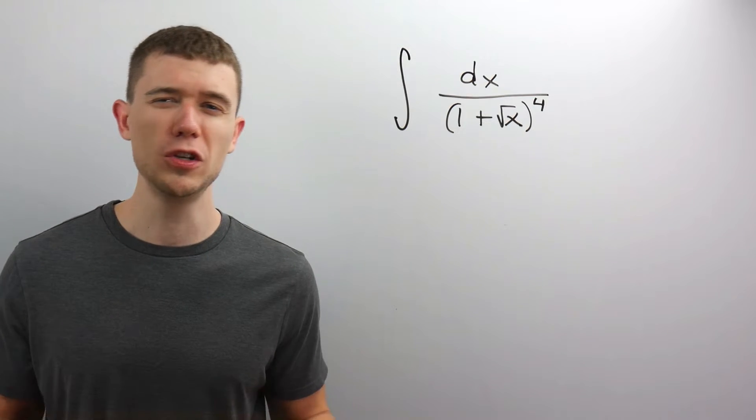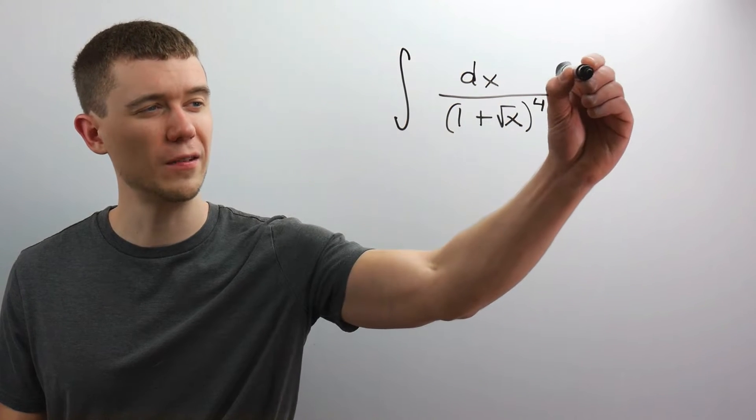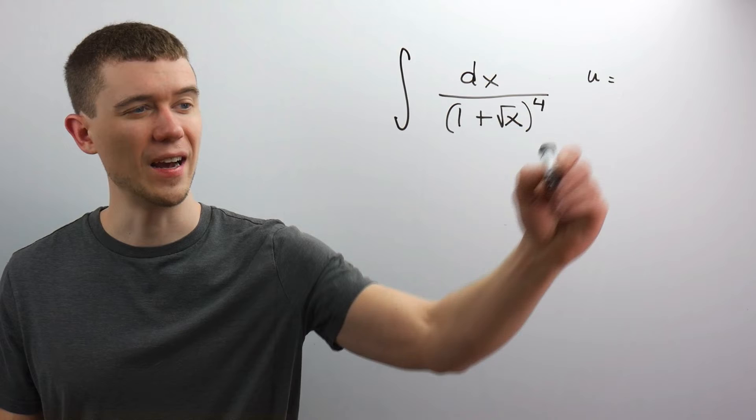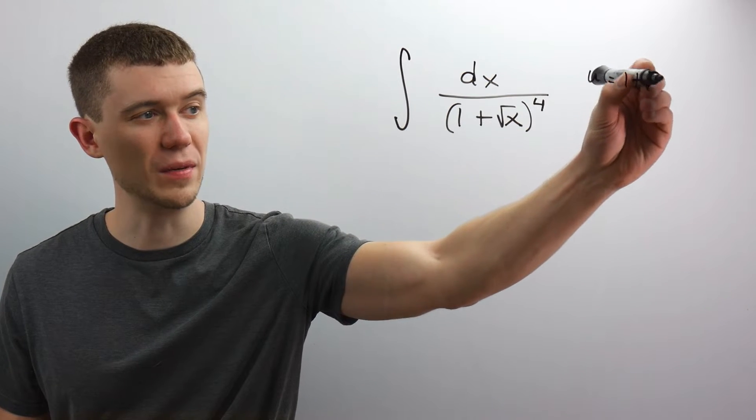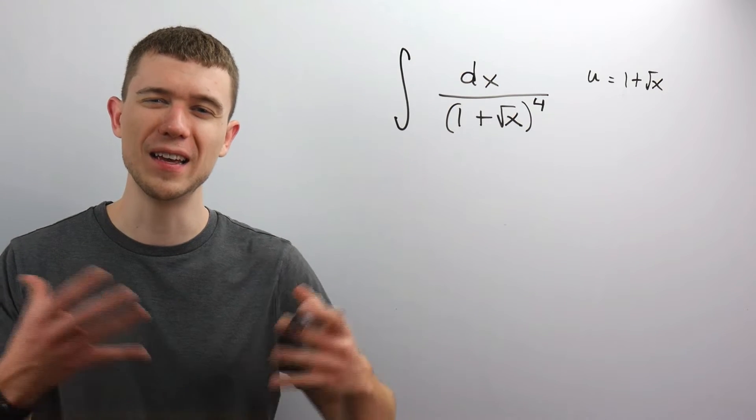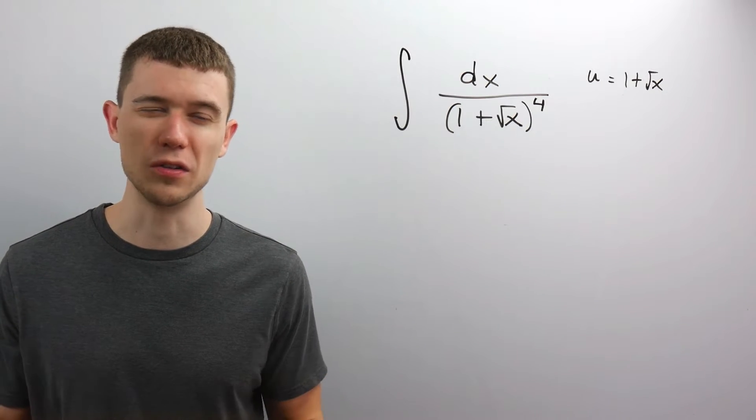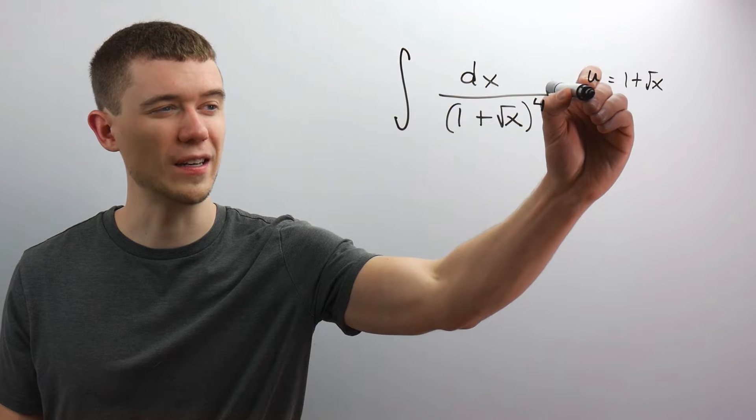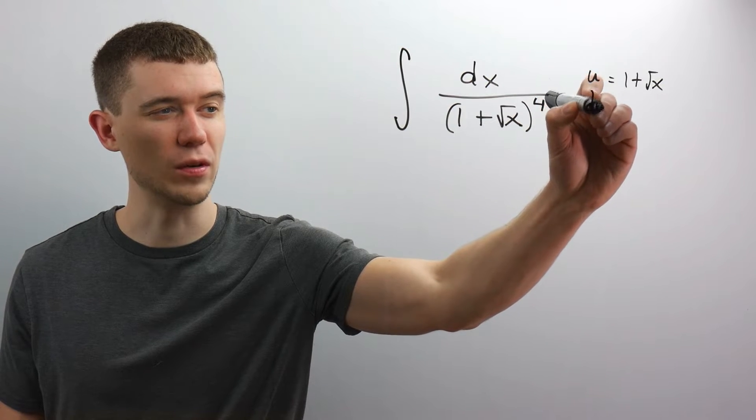But maybe we should go with our gut. Let's, in fact, go with our instinct, and let's let u be the thing you would guess it to be, the thing inside the parentheses. U is usually the thing inside the parentheses or under the square root or in the exponent of e, that sort of thing.